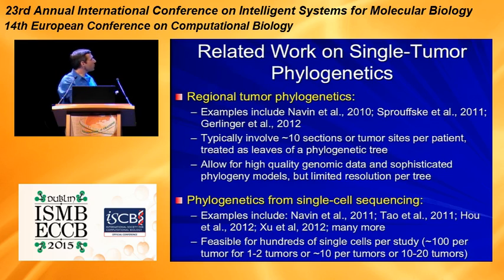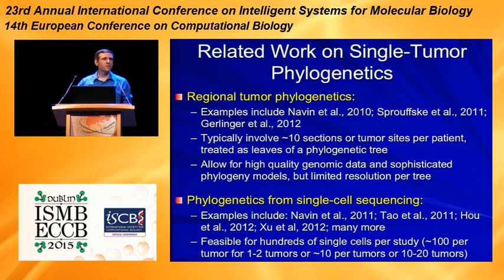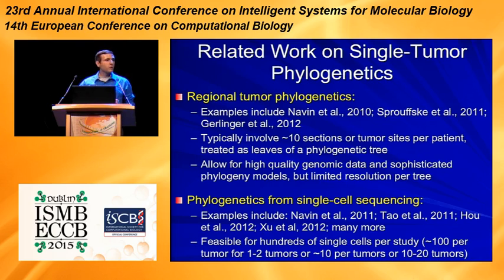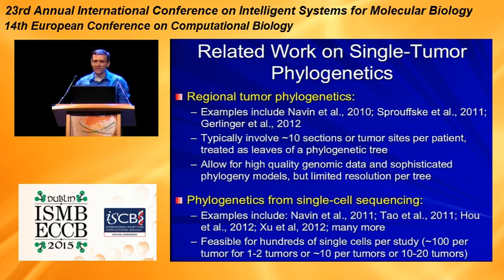Another approach emerged around the same time from work of Navin et al., bringing single-cell sequencing to cancer studies. That led to more studies at the level of single cells where it became possible to really characterize the heterogeneity of a single tumor in great detail by looking at maybe a hundred or so cells per tumor. But this had the appreciable disadvantage that it's still not scalable to large enough sizes to look at very large numbers of cells and very large numbers of tumors — you can get a really good picture of one tumor or a coarse-grained picture of a few tumors, but work is needed to scale these up.